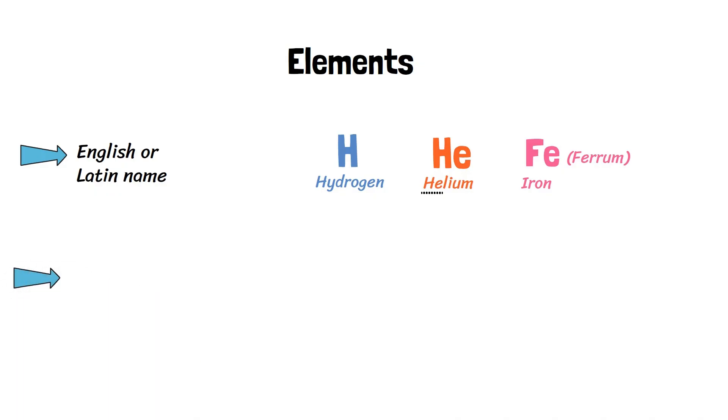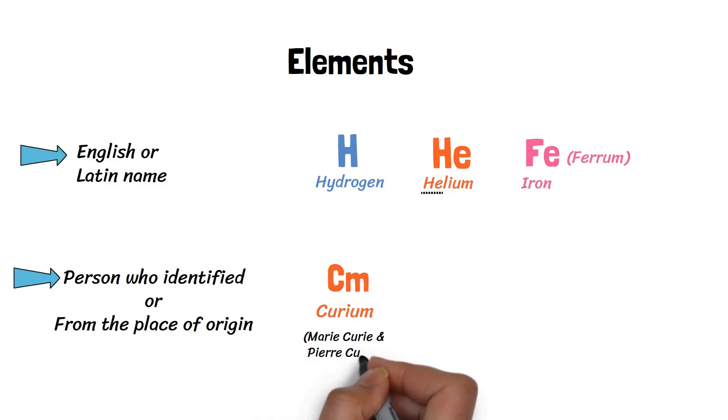The names of some elements are taken from the person who has identified them, or from the place of their origin. For example, curium is named after Marie Curie and Pierre Curie, who were pioneers in radioactivity research. Americium is named after America, as it was discovered in the United States.